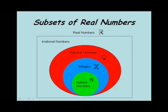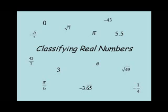This does not indicate that the rational numbers are part of the irrational numbers. From this Venn diagram you can see that any number contained in the natural numbers is also contained in the integers and in the rational numbers. Any number that is contained in the integers is also contained in the rational numbers. This is what we'll use to classify different real numbers.